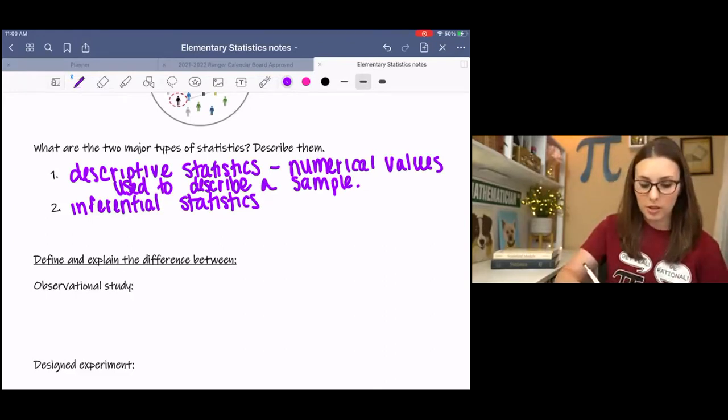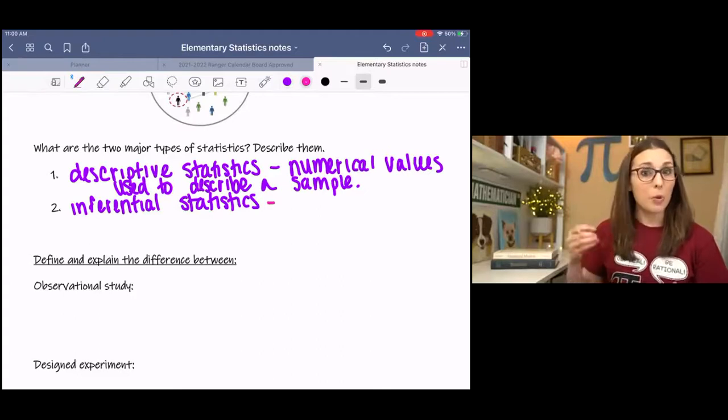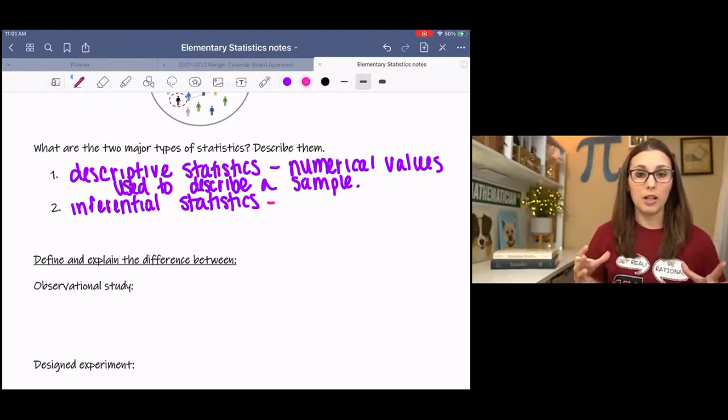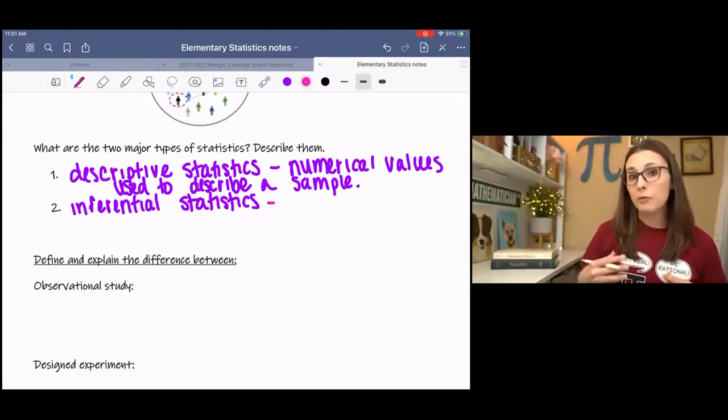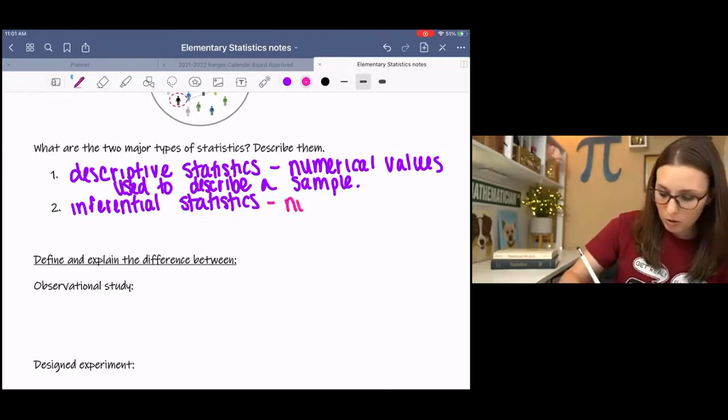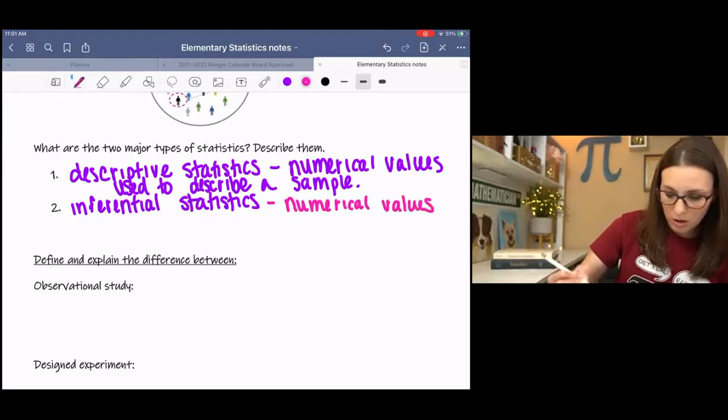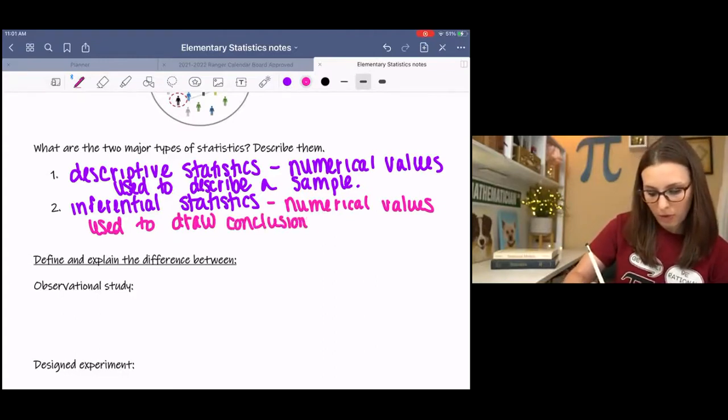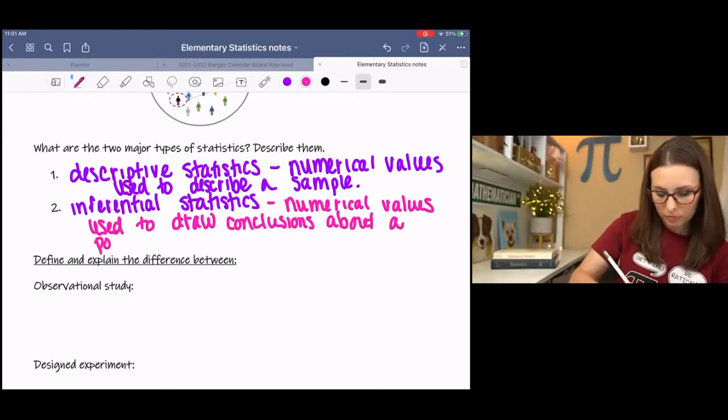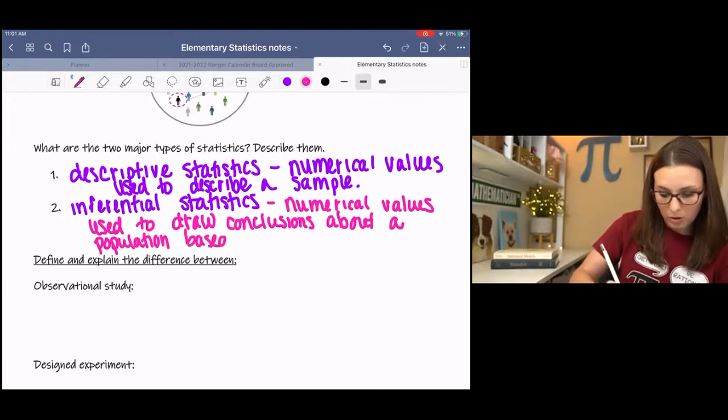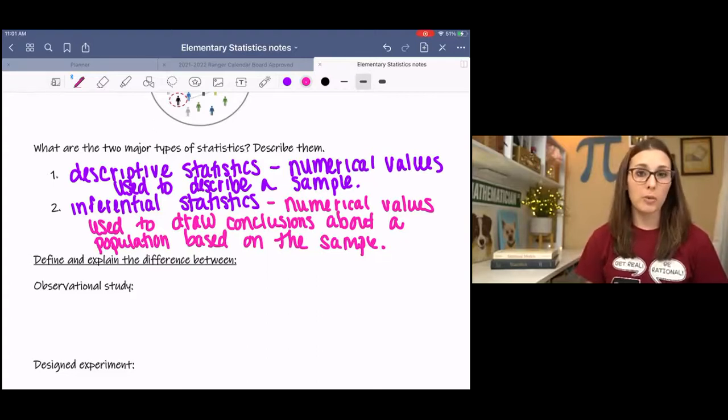And then inferential statistics are numerical values that we use to make predictions about the population based on the sample. So really the first part of the semester, we're going to be just studying how to find descriptive statistics. And then later in the semester, we will use the descriptive statistics to make inferences about a population. So numerical values used to draw conclusions or make inferences about a population based on the sample. So really you have, if you're trying to tell the difference between the two, if one is just describing the sample, that's descriptive. And if one is making conclusions about the population, that's inferential.